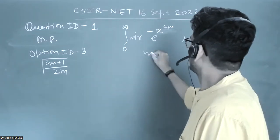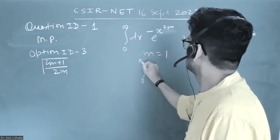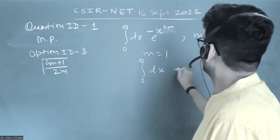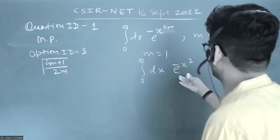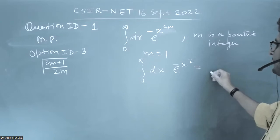For m equals 1, if I put m equals 1, this integral will become 0 to infinity dx e to the power minus x square. So this is a very well known integral. This will become half of under root pi.